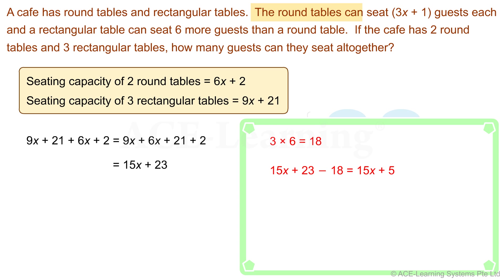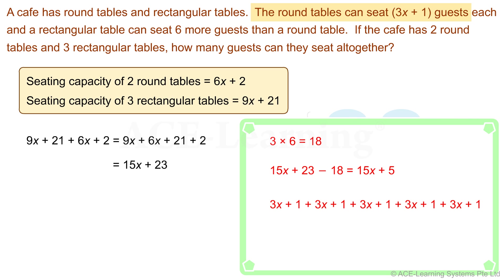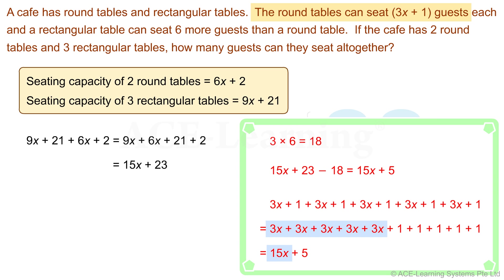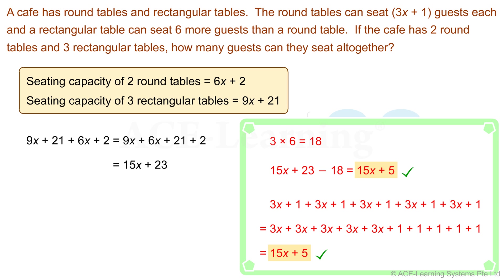Now each round table's seating capacity is 3x plus 1. Let's add this 5 times. Gather all the terms in x, then all the numbers. The terms in x add up to 15x, and the numbers add up to 5. The answers match, hence we have verified that our answer is correct.